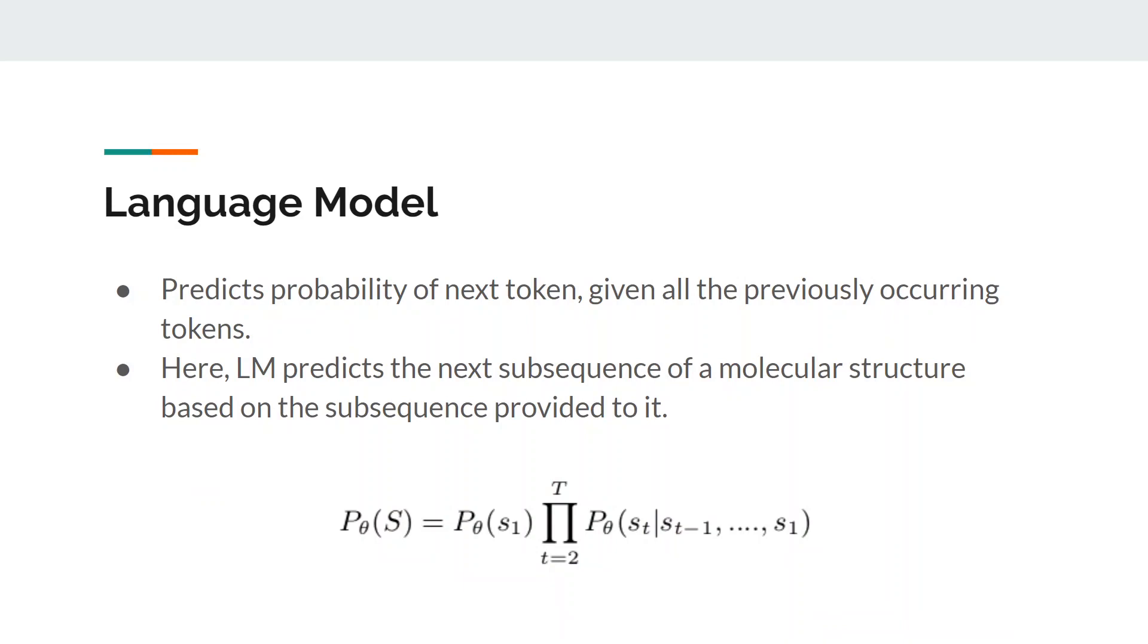Language modelling is used to predict the probability of a token given the tokens that occur before it in a sequence. In this approach, the language model predicts the remaining molecular substructure based upon the substructure provided to it. The formula for finding the probability P of obtaining a sequence S from a given language model is mentioned wherein theta is the parameter learned by the language model.